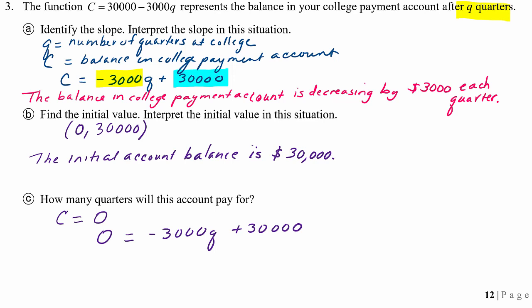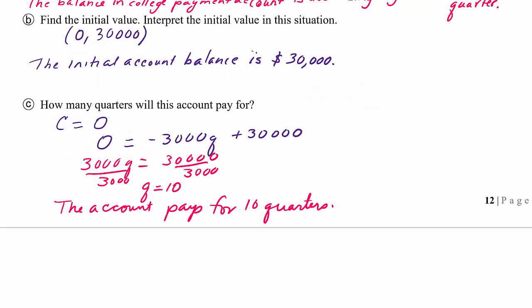So we're going to add the 3,000Q to the other side. They've given us some nice numbers. And then we're going to divide by 3,000, and we get Q equals 10. So we can pay for 10 quarters before the money in the account runs out. And that's my conclusion statement.